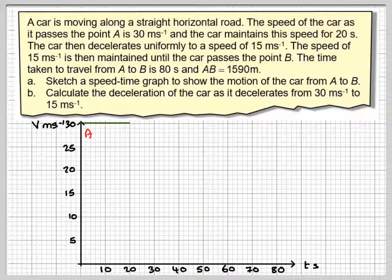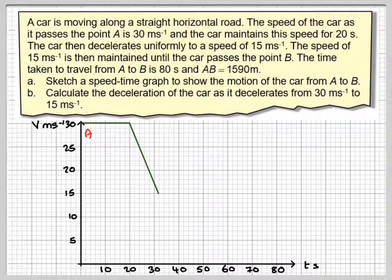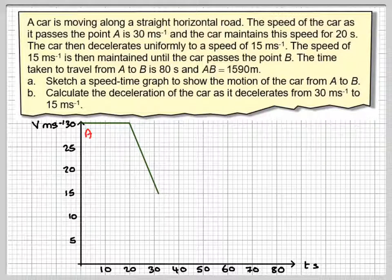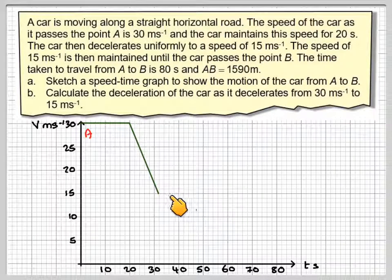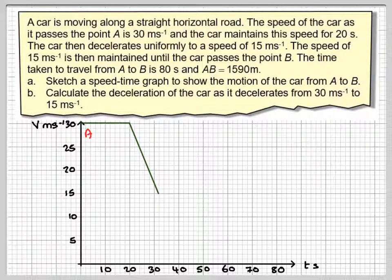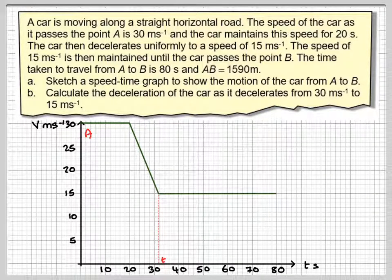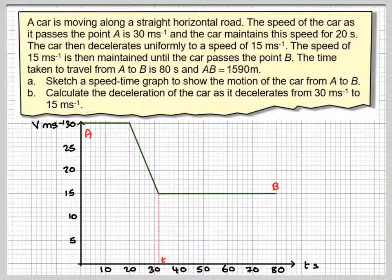It then decelerates, but we don't actually know how long it takes to decelerate. We just have to roughly put on our graph a deceleration down to 15. We can put this anywhere along here and it will still be correct. And then it maintains that speed until 80 seconds have passed.